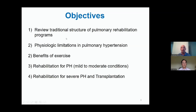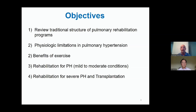The objectives for today's talk are as follows: to review traditional structured pulmonary rehabilitation programs; discuss briefly physiological limitations in pulmonary arterial hypertension; Dr. Oh will highlight the benefits of exercise specifically in cardiovascular populations, and focus on some of the evidence available for rehabilitation for pulmonary arterial hypertension per the most recent guidelines and the Cochrane review. Then I'll highlight a recent publication from our Toronto Lung Transplant Centre encompassing knowledge on severe pulmonary arterial hypertension and transplantation.